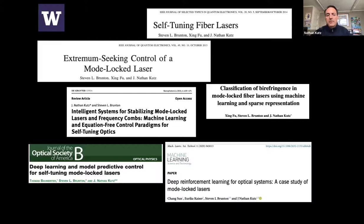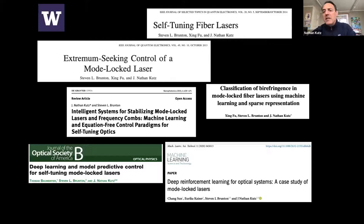All the code is available. If you want to apply it to your optical system, you just need to provide the objective function and your actuations. Here the actuations are the wave plates and polarizers, and the objective function is energy divided by the fourth moment of the spectrum. Within this structure you can build out these architectures.